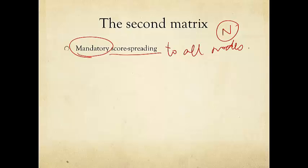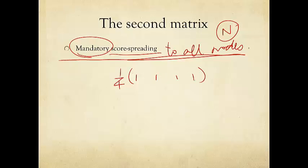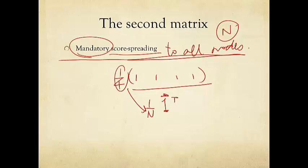Here is a shorthand notation to denote this action of forced importance score spreading to all nodes. We basically say there is 1/4 times the vector [1, 1, 1, 1] — a vector of all ones, written as boldface 1. By convention in this research field, we flip it to a row vector. So it's 1/n — that 1/4 here — times a row vector of all ones. This is what we want to use, but only for the dangling nodes.